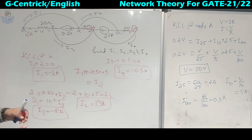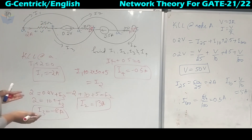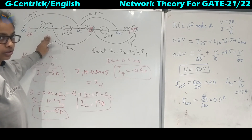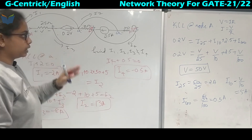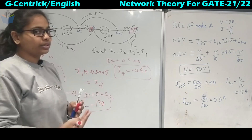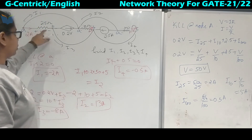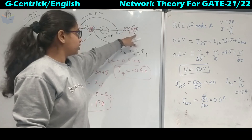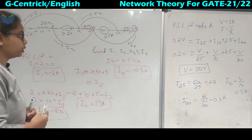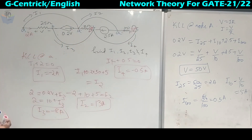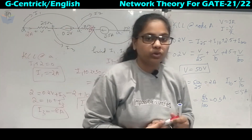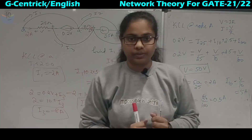To conclude: whenever a zigzag circuit is given, we can redraw it into a normal circuit by identifying and grouping nodes of the same potential, then making it into a simple circuit. In the next lecture, we will move on to Kirchhoff's Voltage Law. Thank you.